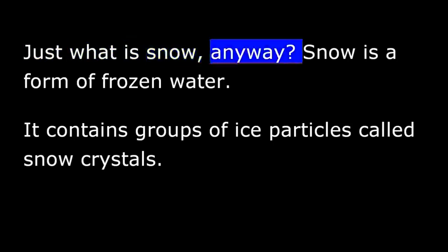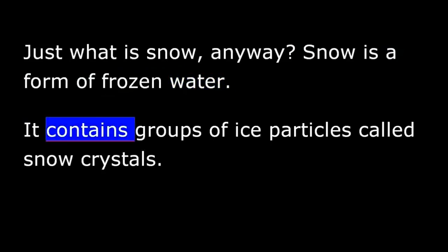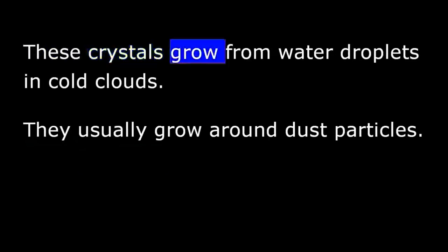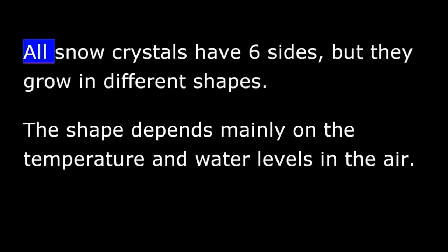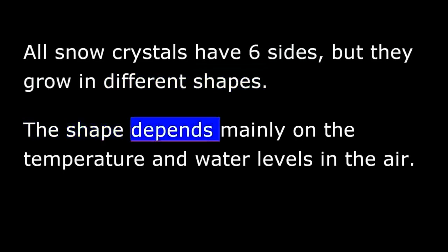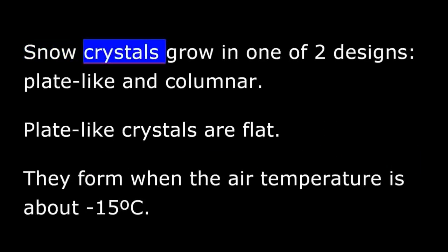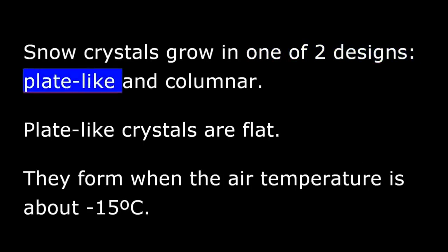Just what is snow, anyway? Snow is a form of frozen water. It contains groups of ice particles called snow crystals. These crystals grow from water droplets in cold clouds. They usually grow around dust particles. All snow crystals have six sides, but they grow in different shapes. The shape depends mainly on the temperature and water levels in the air. Snow crystals grow in one of two designs: plate-like and columnar.